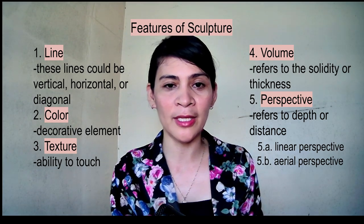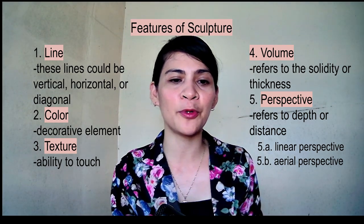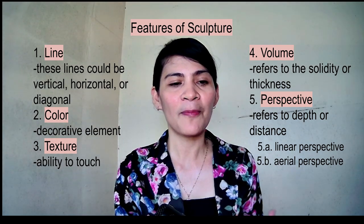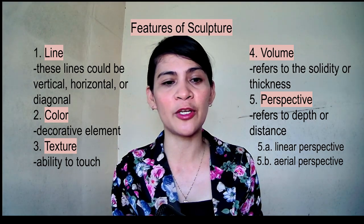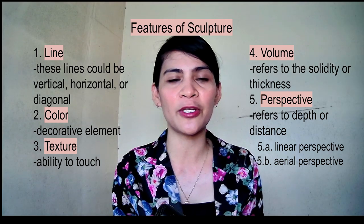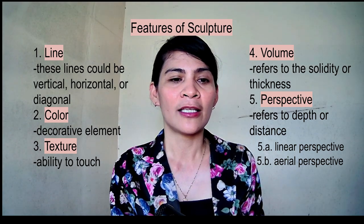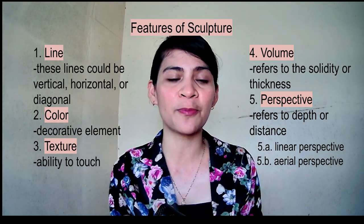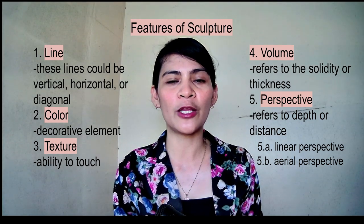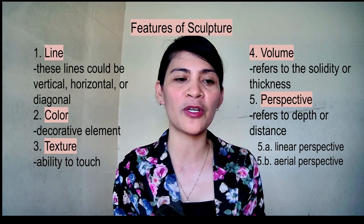We also need to consider color, which is a very important feature in sculpting. Color is the decorative element put into the art piece. The piece of art remains natural in color, but in some cases color is added, especially when using glass or plastic. Color is generally referred to as its property and value.